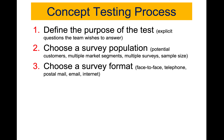The third step is to choose a survey format. Are you going to do face-to-face, phone interview, email, or internet? Be careful not to introduce sample bias. For example, if you use email, your population might all be categorized as technologically sophisticated. Be careful about that — it is very important.